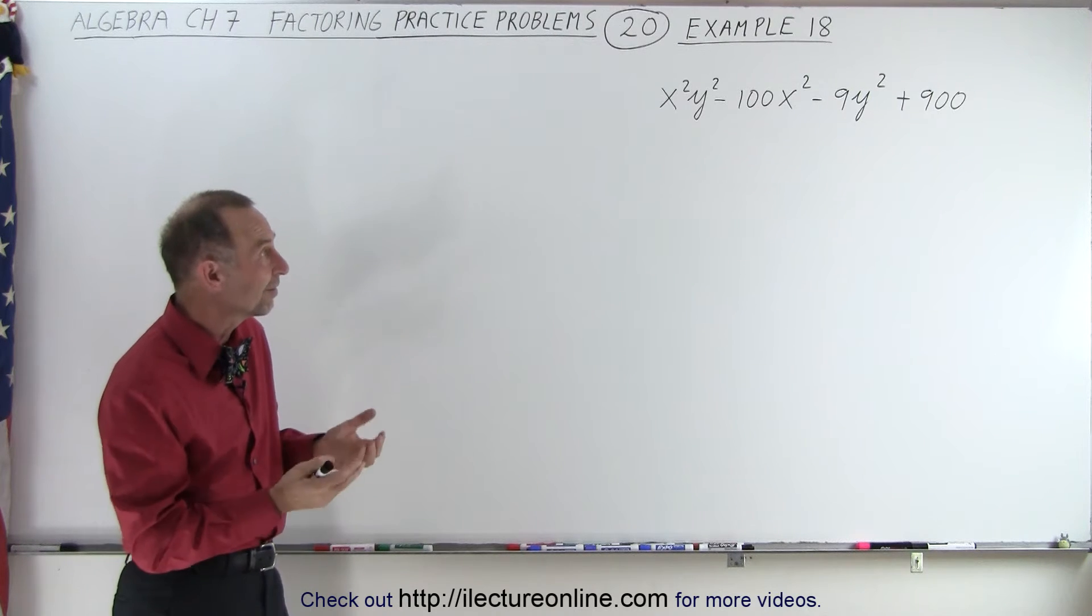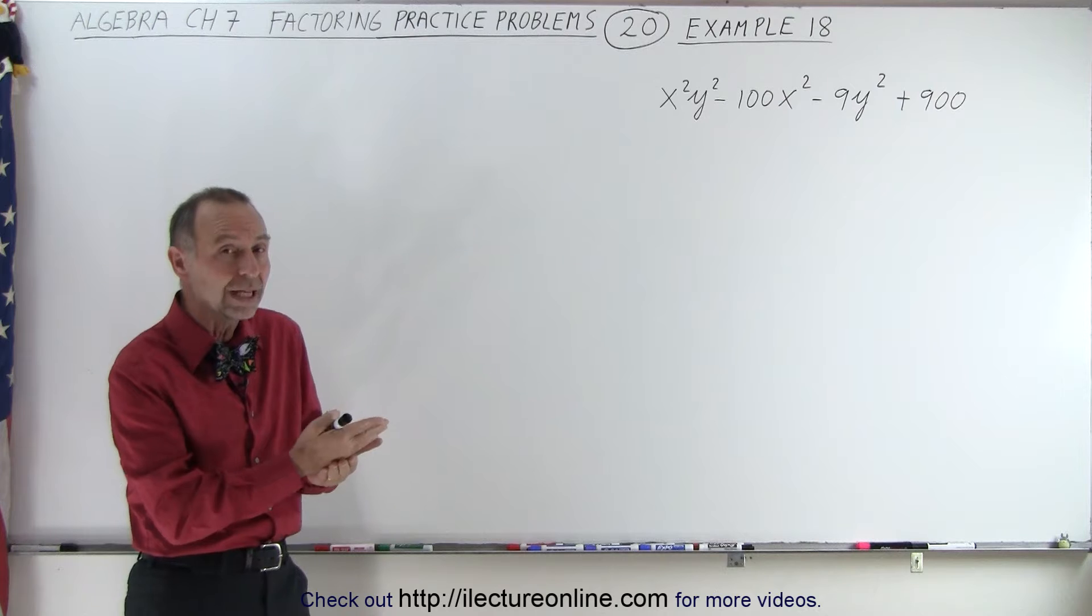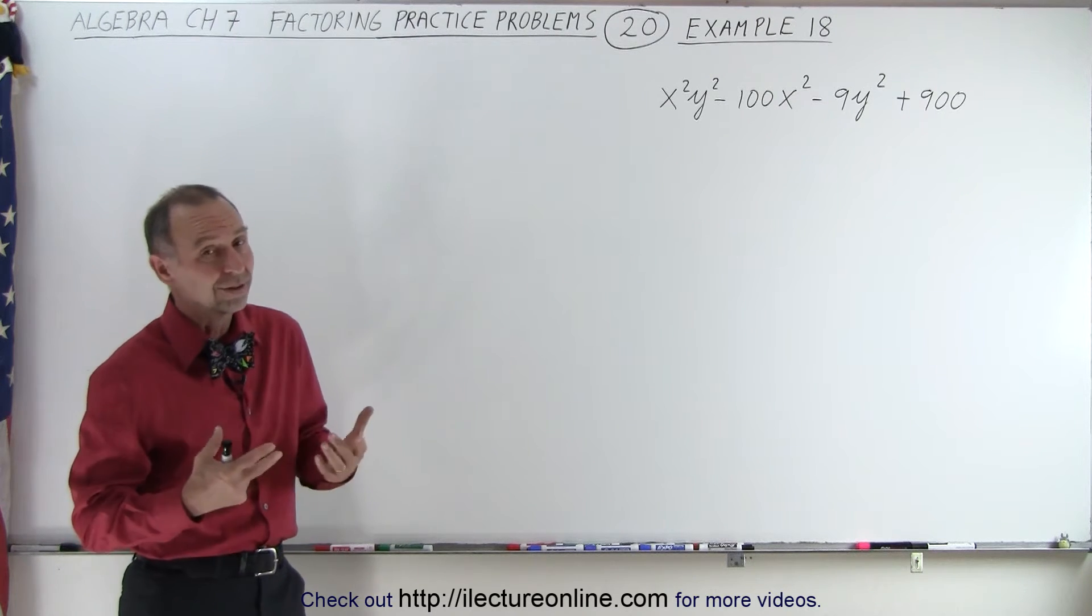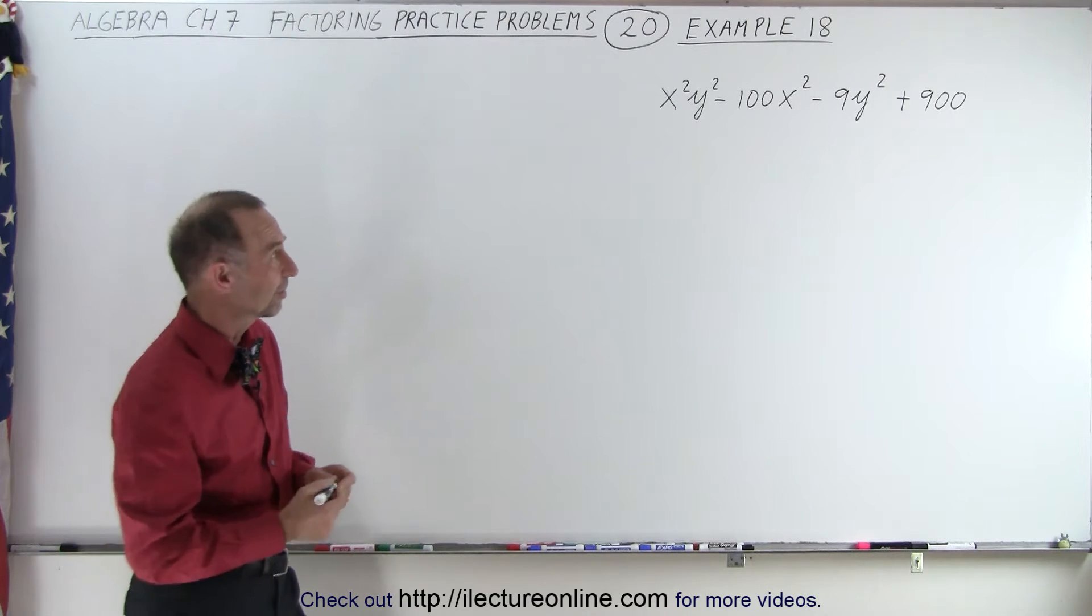Let's group two by two and see if we can factor something that's common in each of the two groups. And sometimes it will pop right out. If it doesn't, then it cannot be factored. So let's give it a try.